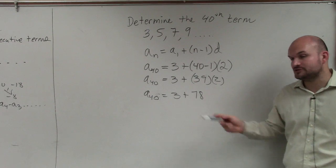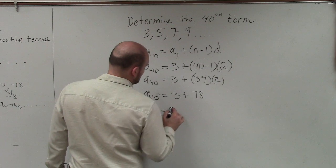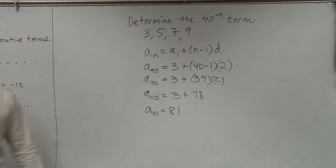Now I'm just going to add these two, which will give me a sub 40 equals 81. Done. Fine. Isn't that easy?